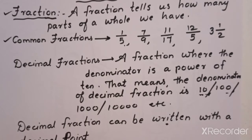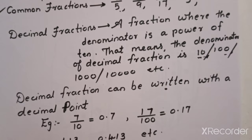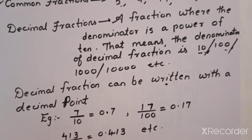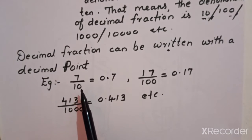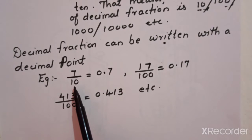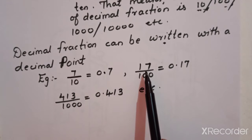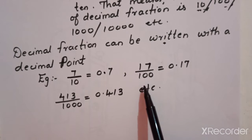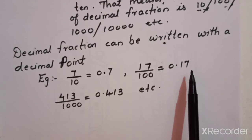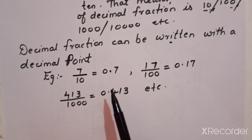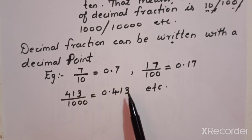A decimal fraction can be written with a decimal point. If we put a point — a tiny dot between two numbers — it is a decimal point. In a common fraction we put a slash; in a decimal fraction we put a point. For example: seven upon ten converts to 0.7; seventeen upon hundred converts to 0.17; four hundred thirteen upon thousand converts to 0.413.